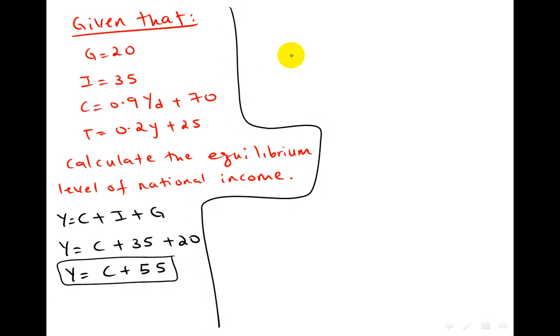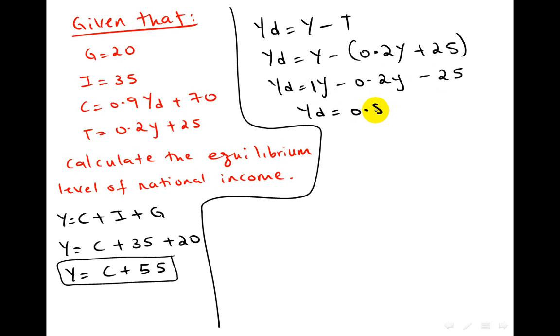These types of questions are going to be solved by substituting these formulas in each other. Once you are done with this formula, go to Yd equals Y minus T. Take this formula of T and plug it here. Don't forget that this negative is going to be multiplied by everything inside the bracket. Don't forget that the coefficient is here 1, so 1 minus 0.2 will give you 0.8Y. Here you have another formula.